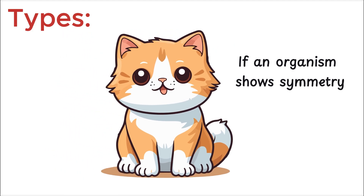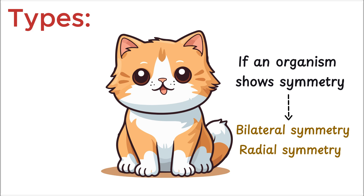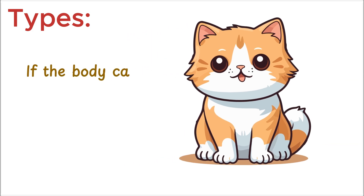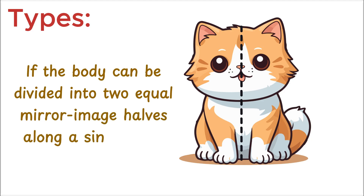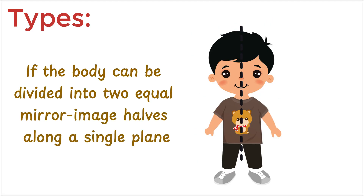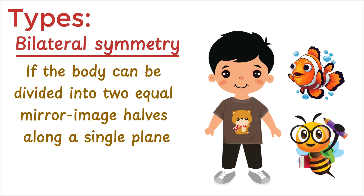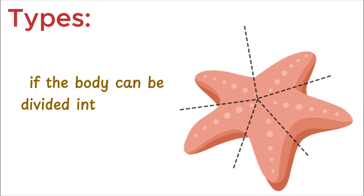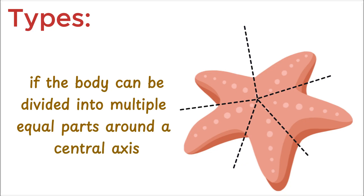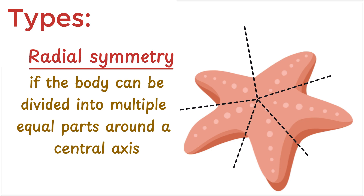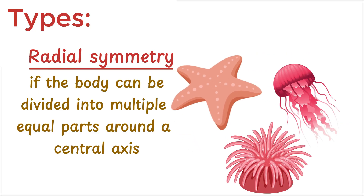Now, if an organism shows symmetry, it can be of different types depending on how its body parts are arranged. If the body can be divided into two equal mirror image halves along a single plane — just like our own bodies — it is called bilateral symmetry. In this type, there's only one line that divides the body into right and left sides. Most animals, like humans, fish, and insects, show bilateral symmetry. But if the body can be divided into multiple equal parts around a central axis, like slicing a pizza, then it is called radial symmetry. Organisms like starfish, jellyfish, and sea anemones display radial symmetry.